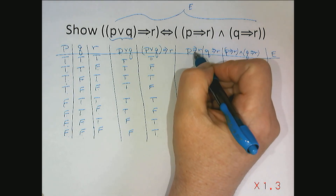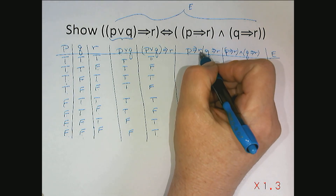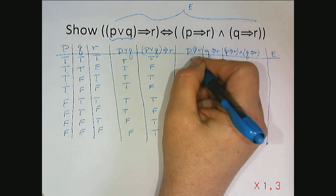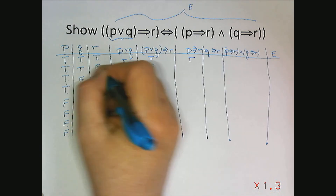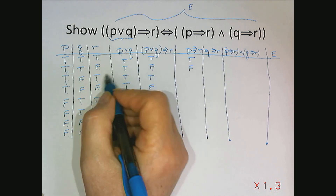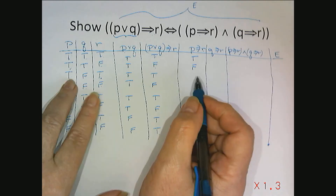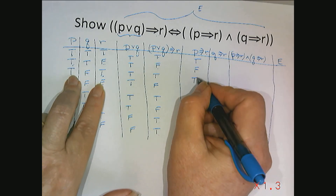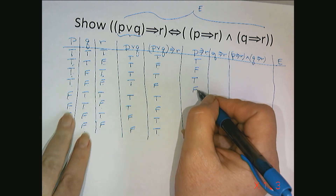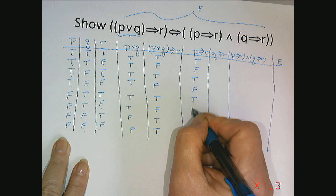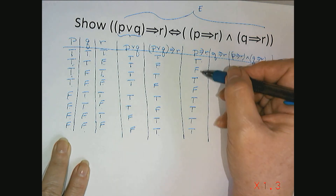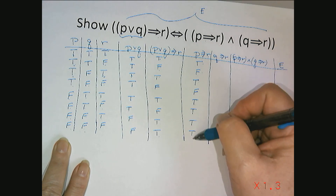Now let's look at p implies r: true implying true is true; true implying false is false; true implying true is true; true implying false is false; and false implying anything is always true. So I end up with true, false, true, false, true, true, true, true.